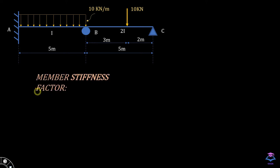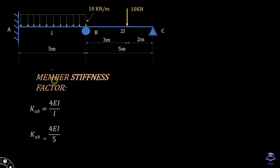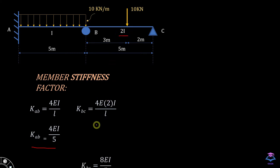Now we calculate the member stiffness factor, equal to 4EI/L, where E is the modulus of elasticity, I is the moment of inertia, and L is the length of the span. For the first member with L equal to 5 m, K_AB comes out to be 4EI/5. For the second member with I equal to 2I and L equal to 5 m, K_BC comes out to be 8EI/5.